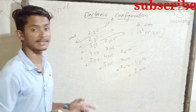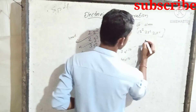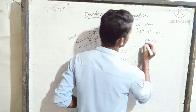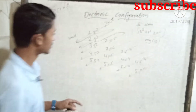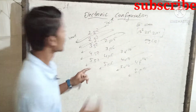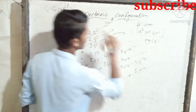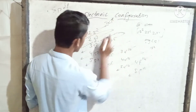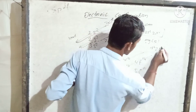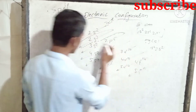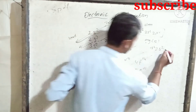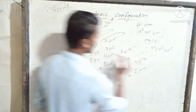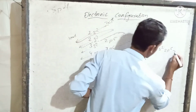For example, Magnesium — Mg — has atomic number 12. How do we do this? 1s2, 2s2, 2p6, 3s2. That is the electronic configuration for Magnesium.